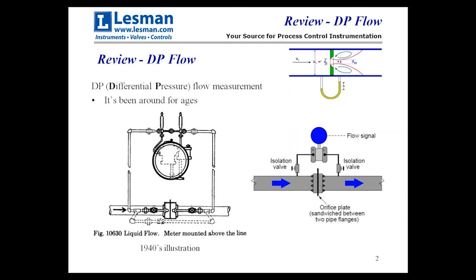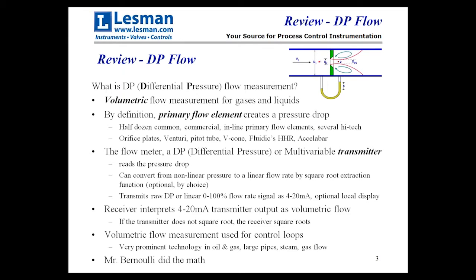So what is differential pressure flow measurement? It's basically a volumetric flow measurement for gases and liquids. By definition, there's some kind of primary flow element that creates the pressure drop in the pipe. There's a half dozen common commercial varieties: the common ones are orifice plates, averaging pitot tubes, and venturis. Then there are several high-tech versions — Fluidix HHR takes the Venturi and enhances it, and the same with Accelabar, which uses a pitot tube enhanced to give more response in a smaller package. The flow meter is actually a differential pressure transmitter, or a multivariable transmitter, which reads the pressure drop and has the option of converting that nonlinear pressure drop to a linear flow rate by doing a square root extraction.